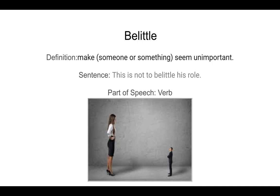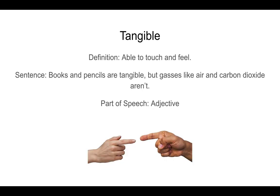The next word is tangible, spelled T-A-N-G-I-B-L-E. Tangible means able to touch and feel. A sentence for tangible: books and pencils are tangible, but gases like air and carbon dioxide aren't. Part of speech is an adjective. In the picture, people are sticking their fingers out — they can touch objects but can't feel the air surrounding their hand.